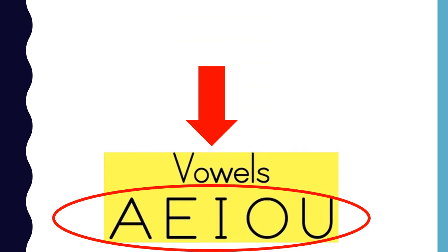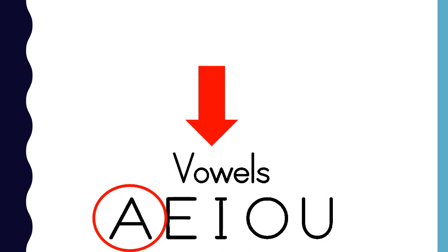These letters are called vowels. When you say a vowel sound, your mouth stays open. The vowels are A, E, I, O, U.